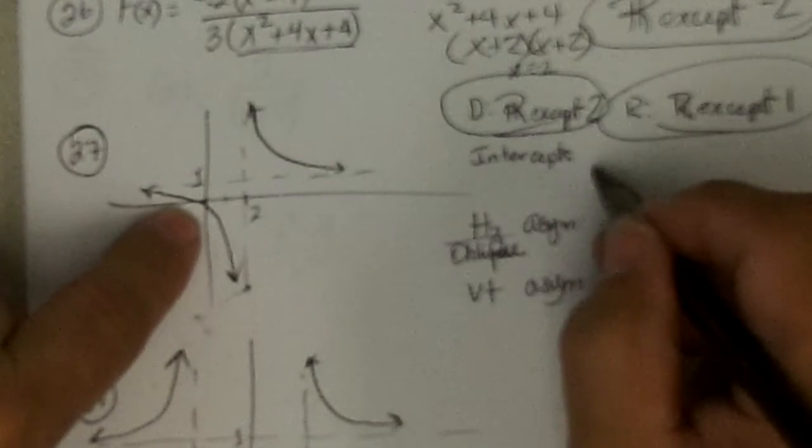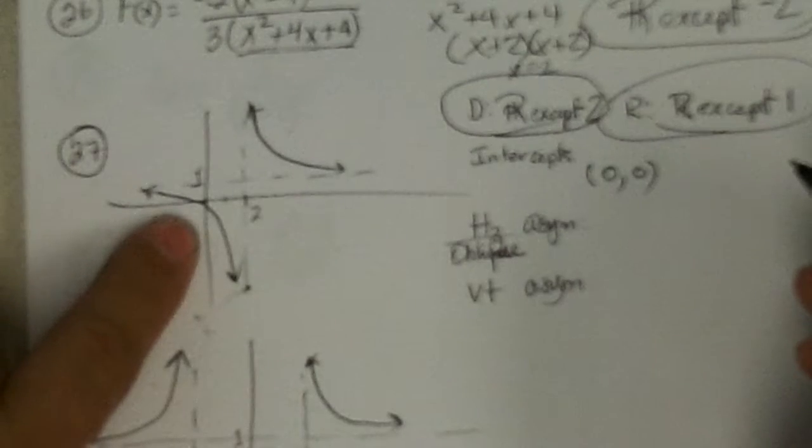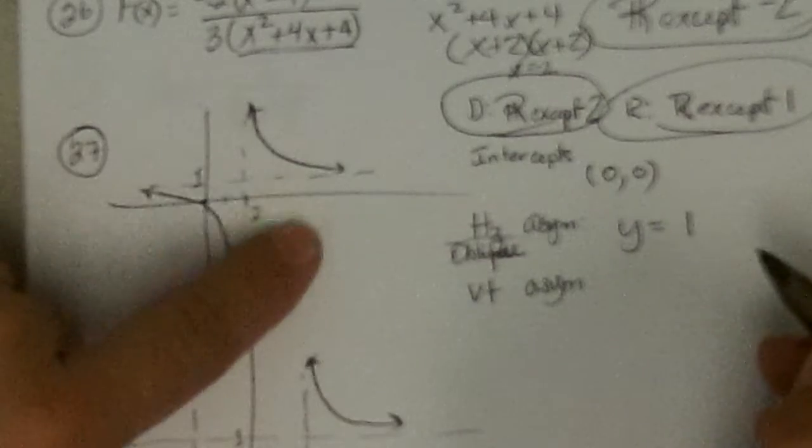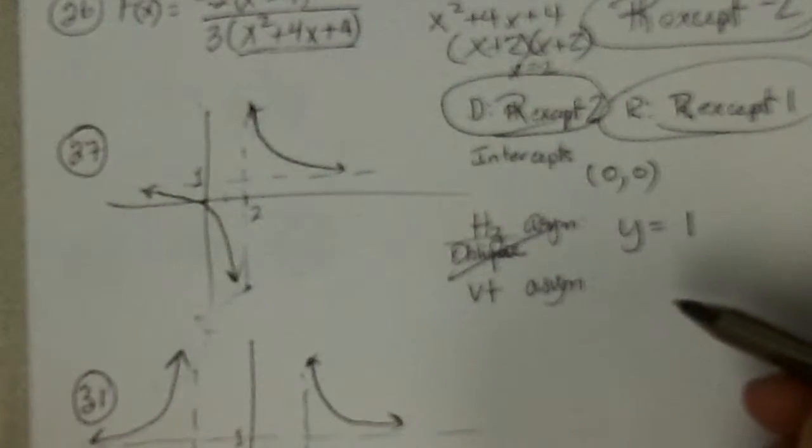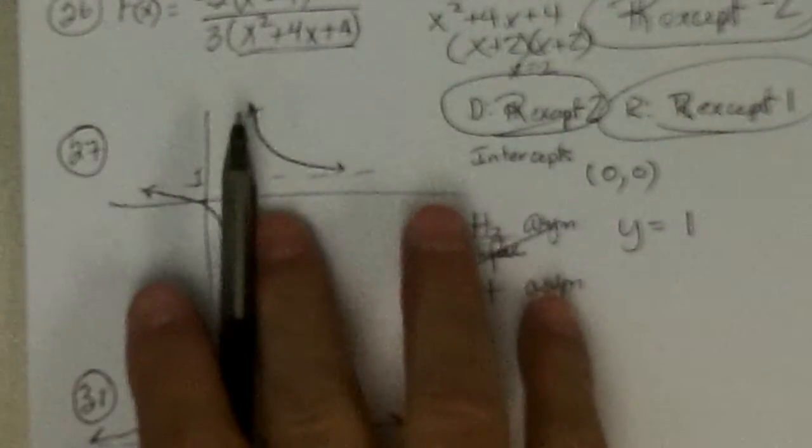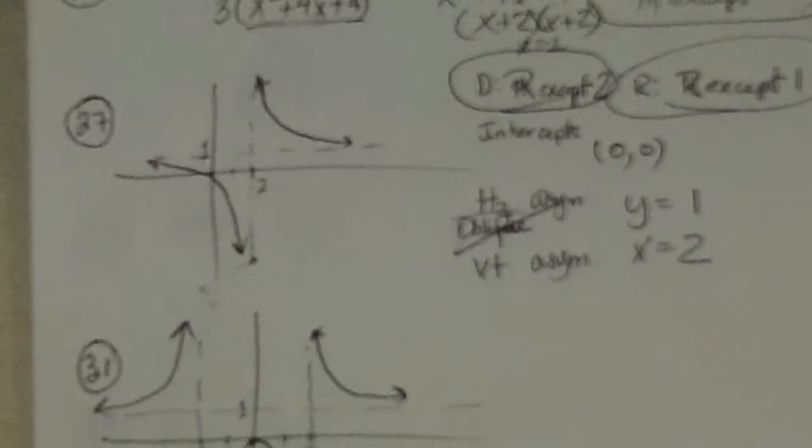Intercepts. There's only 1. The x and y intercept is 0, 0. The horizontal asymptote looks like it's y equal 1. And since it's horizontal, there's no oblique. It's either horizontal or oblique. It can't be both. And the vertical asymptote is at x equal 2. That's 27.